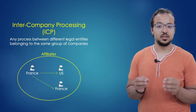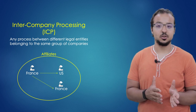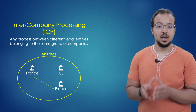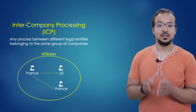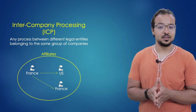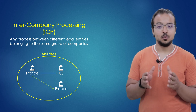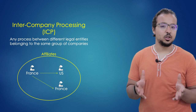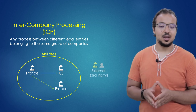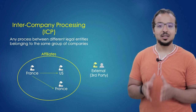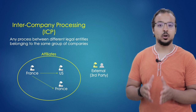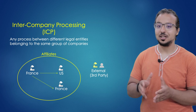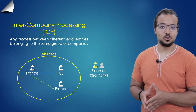These two different legal entities can also be called sister companies or affiliate companies. When we say a sister or affiliate company, it means they are two different legal entities that belong to the same group. Now we know the meaning of ICP, but what is the meaning of a third party or external customer? This is any entity that doesn't belong to our group of companies.